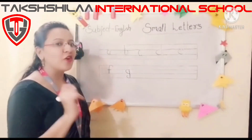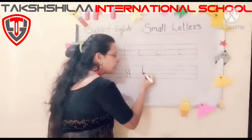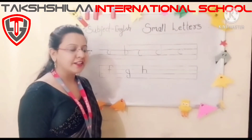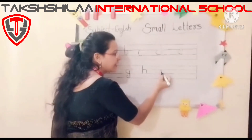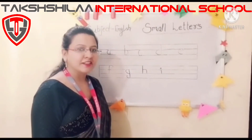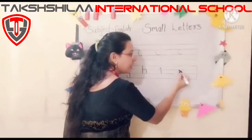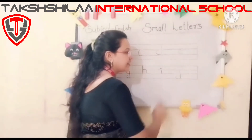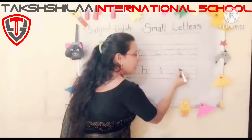The next letter is H for hand. You have to use three lines, then half curve, then half curve. Then I for ice cream — small standing line, then dot. Then J for jug — make a standing line in the bottom of three lines, then a dot.